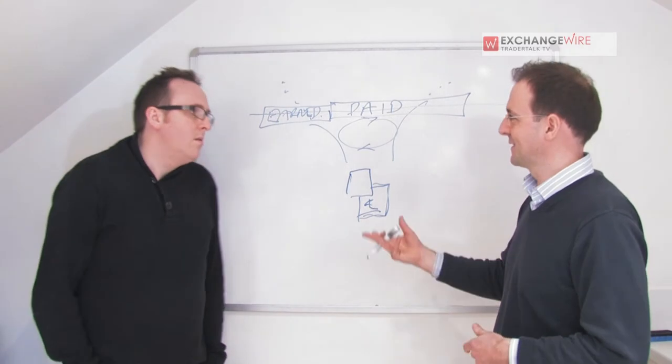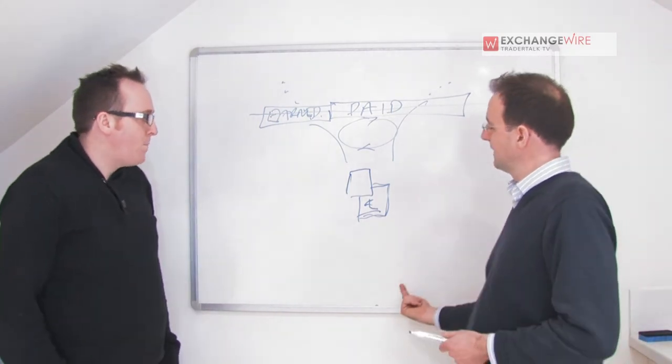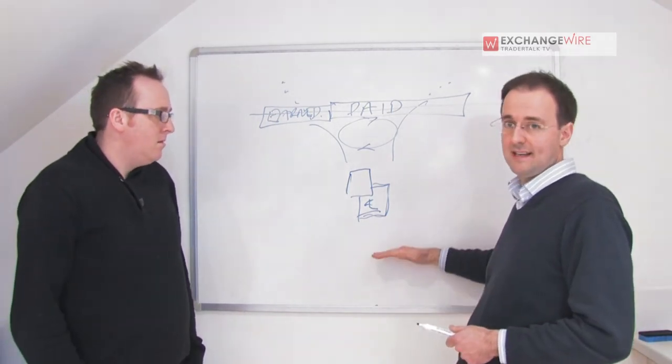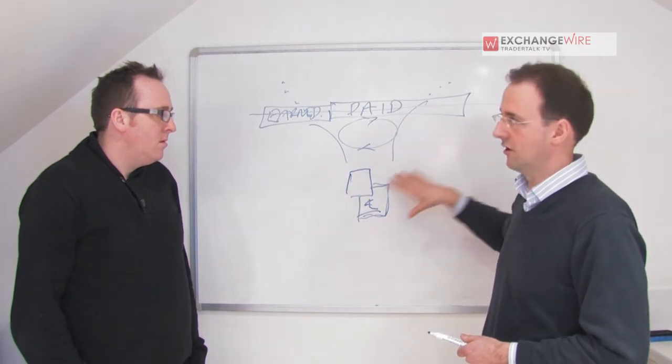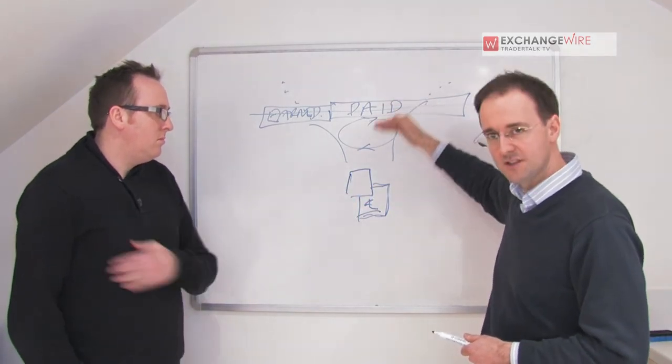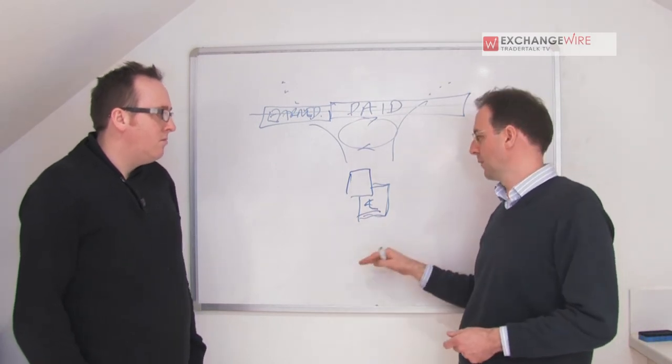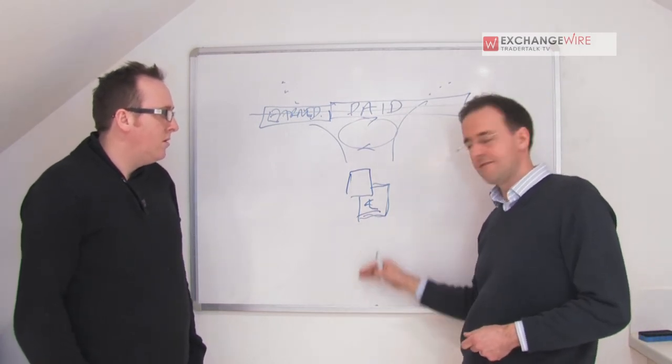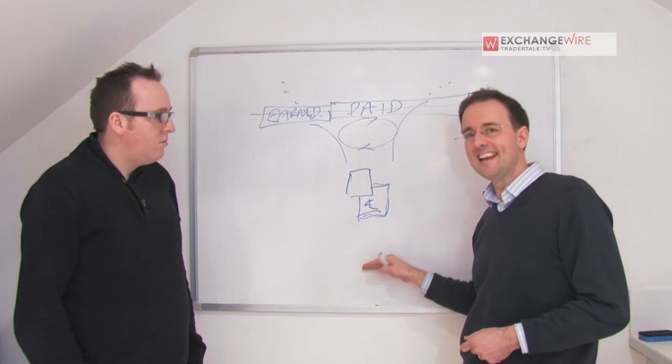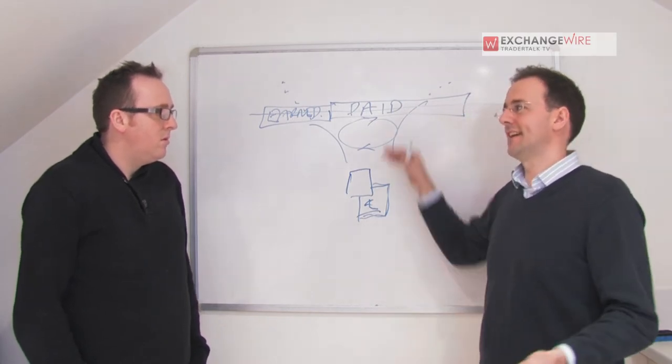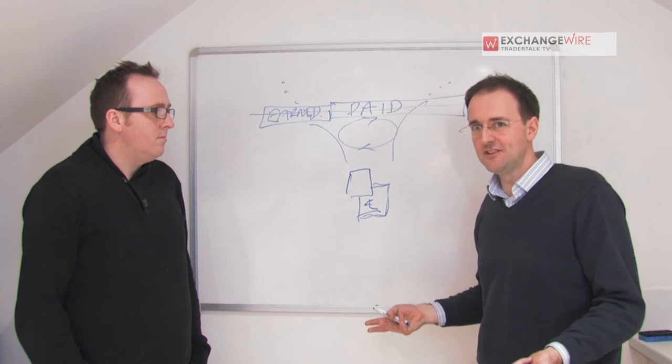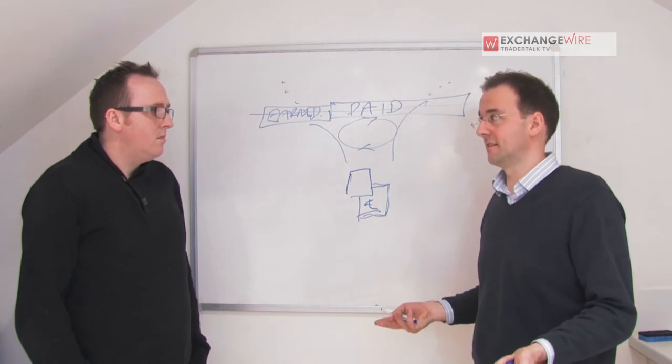Now, where we need to go with this, I suppose, is to try and bring in more first party data that the brand has that you don't have from the online environment. So after a user's come through and bought something, what happens then? You know, we want to get the lifetime value data, you want to get the net net value. So imagine a financial lead isn't just a lead, you need to know whether that turned into value or not.